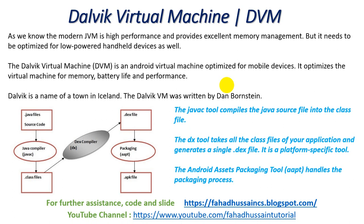The Dalvik Virtual Machine, which we call DVM, is an Android virtual machine optimized for mobile devices. It optimizes the virtual machine for three important aspects: memory, battery life, and performance. Not only memory management but battery life also gives you better performance, so all three parts need to be optimized.